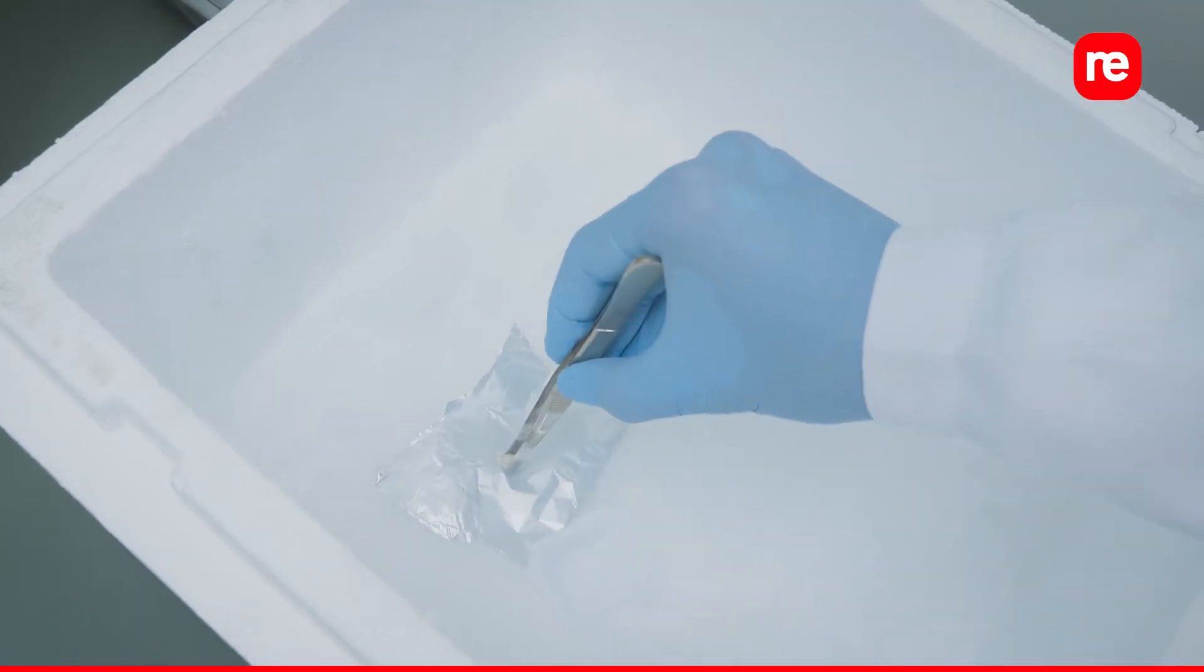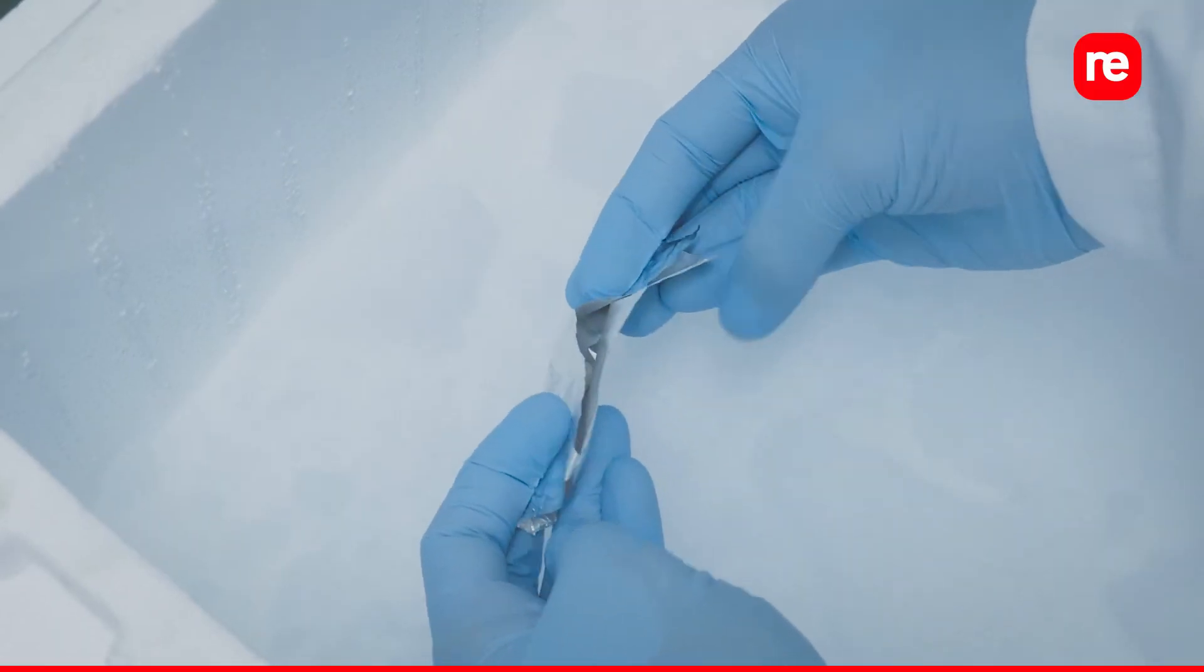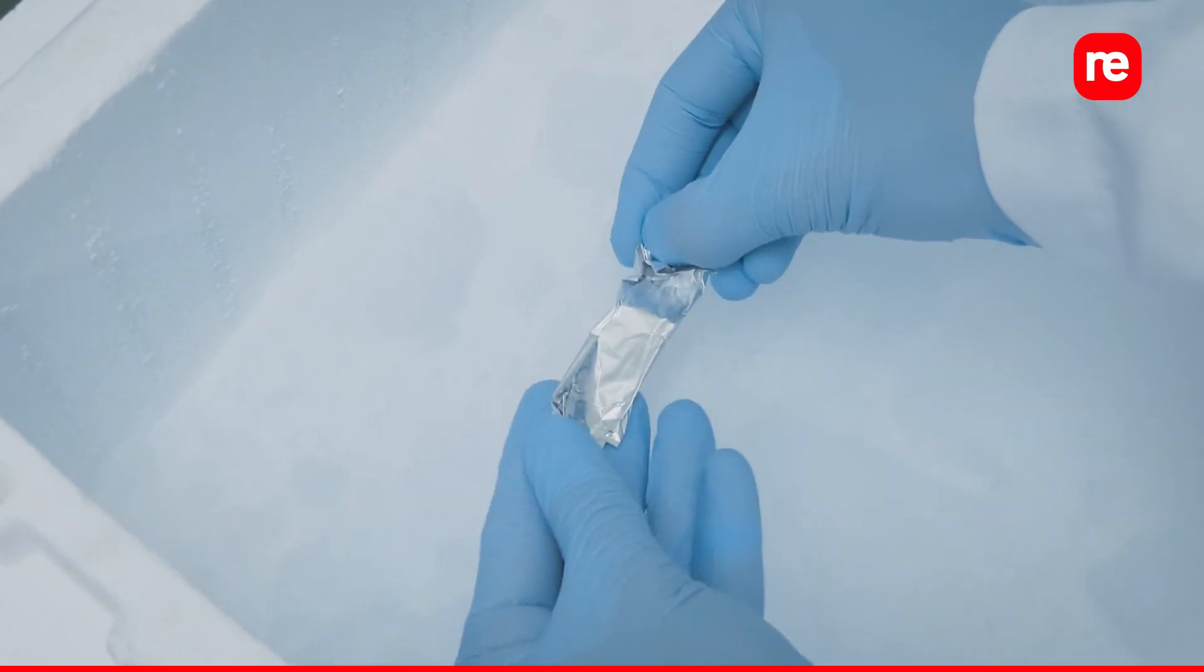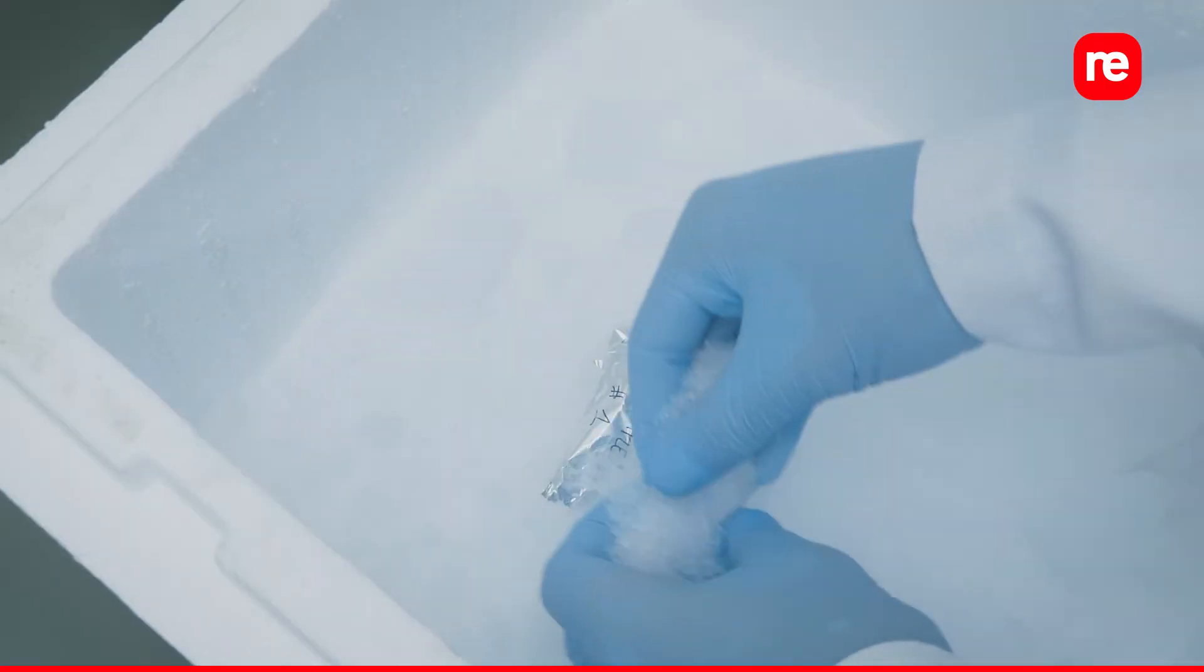Wrap the tissue in a pre-cooled and labeled piece of aluminum foil and store the wrapped tissue at minus 80 degrees Celsius until sectioning.